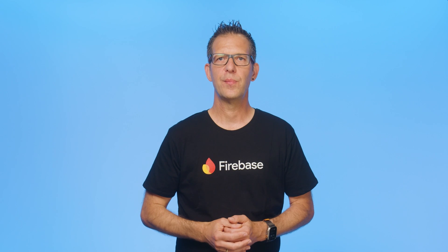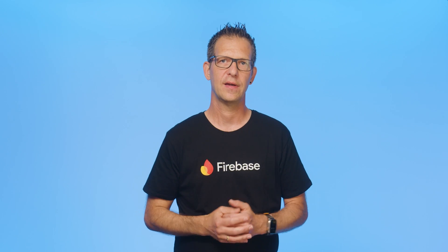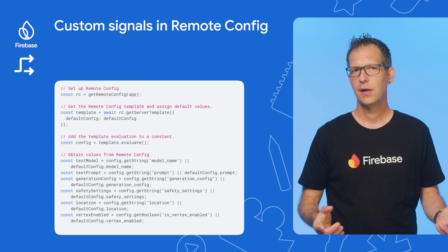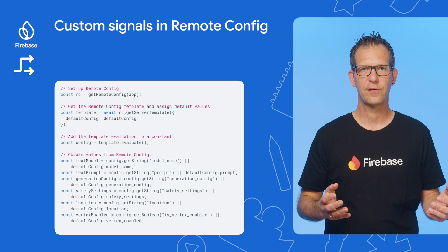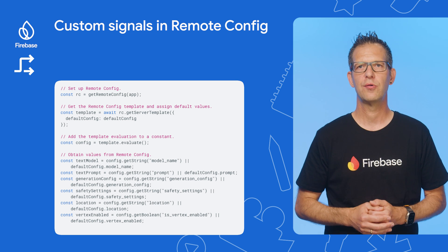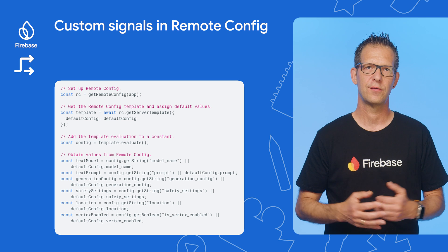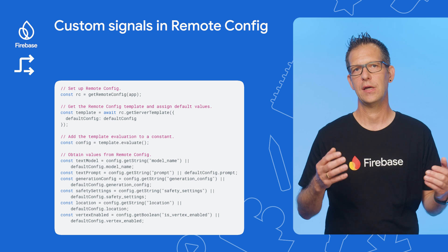Firebase Remote Config supports server-side configuration using the Firebase Admin SDK for Node.js in version 12.1 and above. This allows you to dynamically manage the behavior and configuration of server-side applications using Remote Config. For example, if you want to select different prompt or model configurations in your Genkit flows, you can define the following parameters in your Remote Config server template and then load them in your flow.